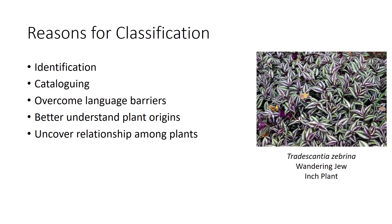Before you begin to classify plants, it is important to understand why they are classified. Plants are classified for identification and cataloging purposes as well as to overcome language barriers. When plants are scientifically classified and named, the plant retains that same name all over the world, unlike common names that can be very different within the same country or even the same state. For example, Tradescantia zebrina is also known as Wandering Jew or Inchplant in the U.S. By classifying plants, we can better understand their origins and uncover relationships among plants, which is useful when growing different types together for mutual benefit.